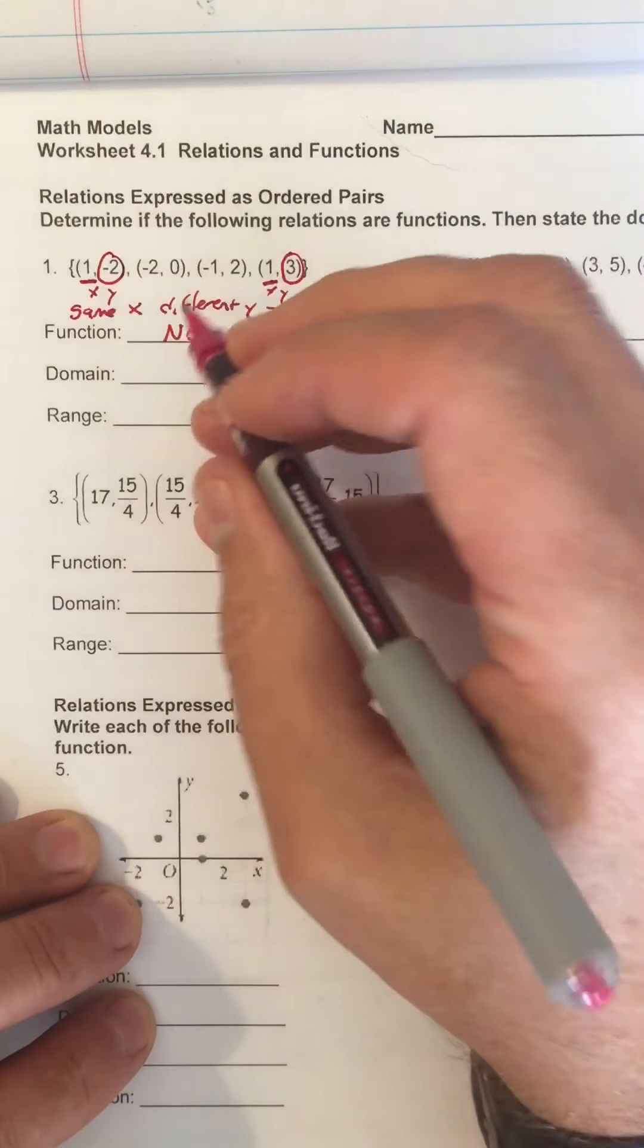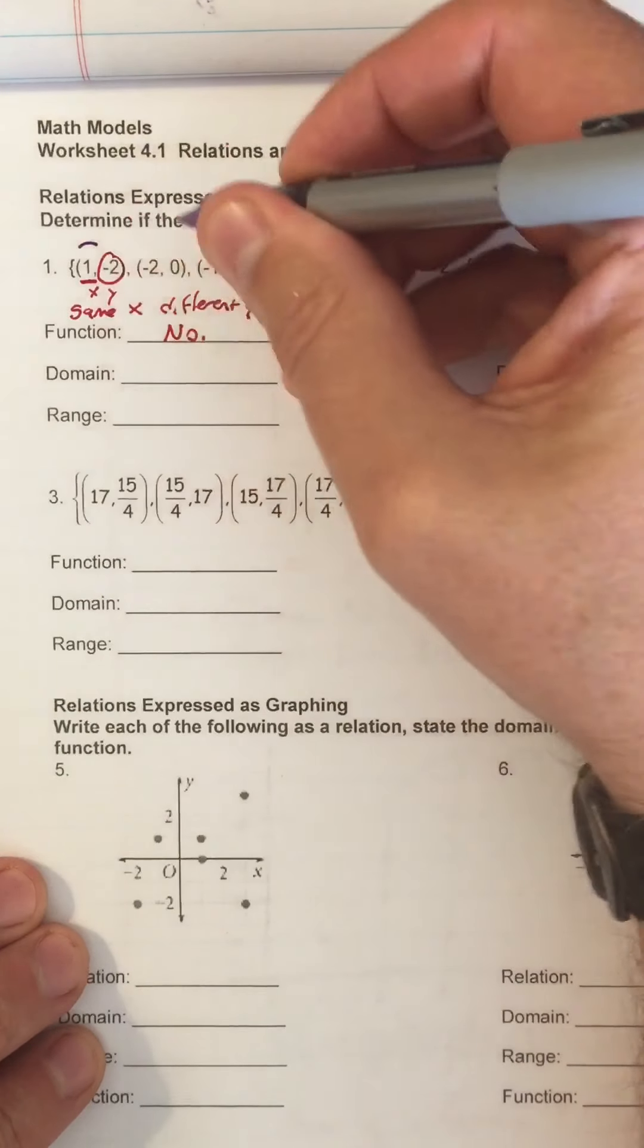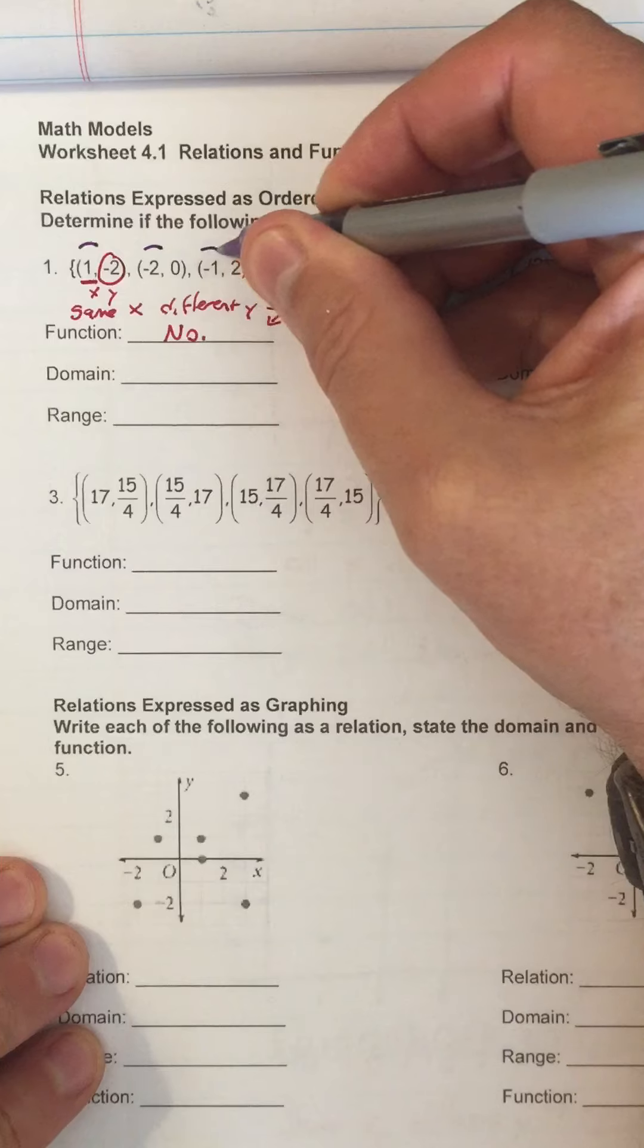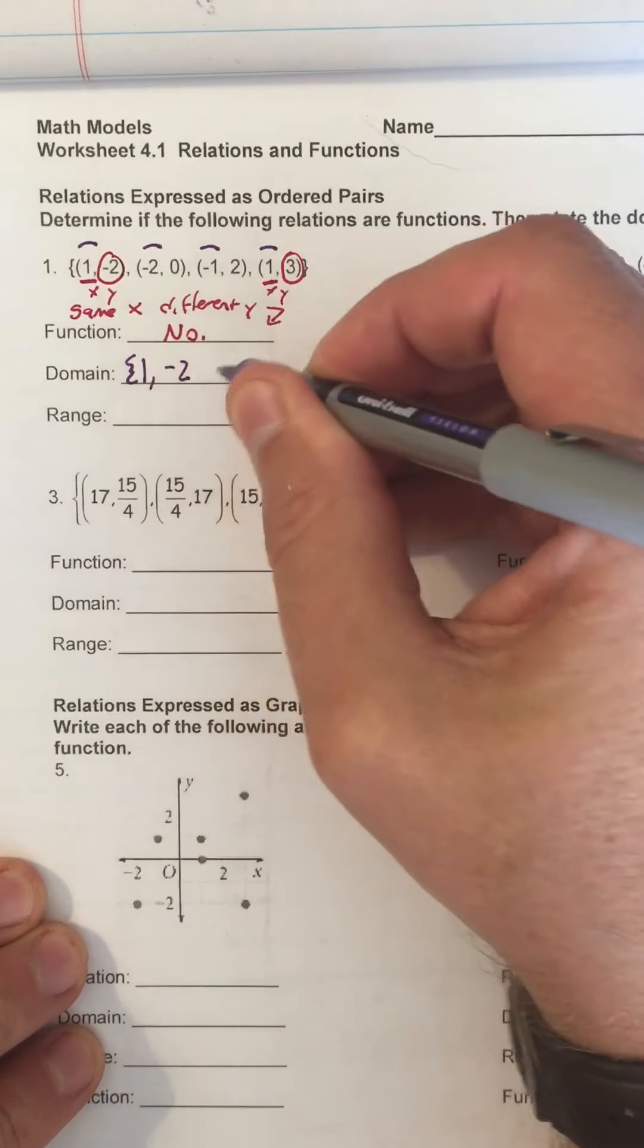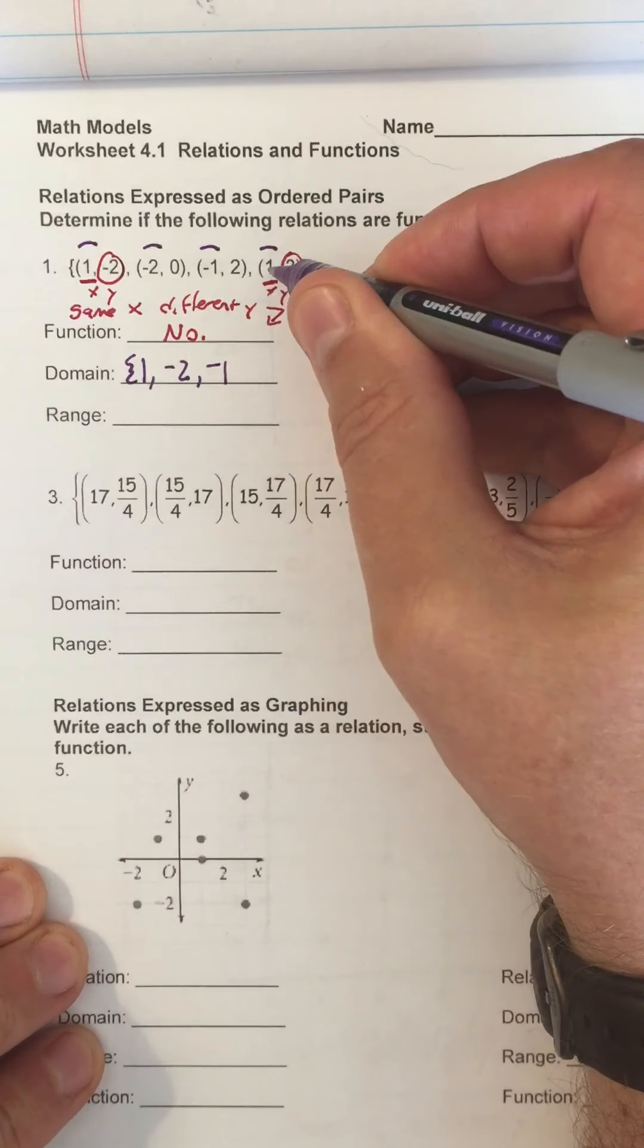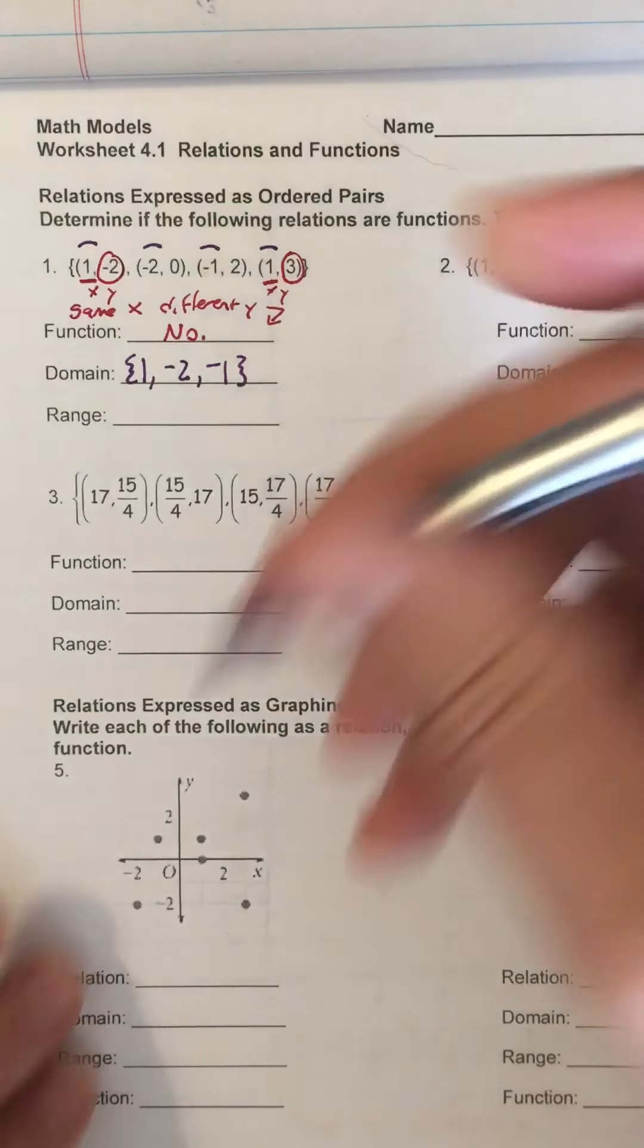Alright, what is the domain? The domain is all the x numbers. 1, negative 2, negative 1, and 1. So 1, negative 2, negative 1. And since we already have one, we don't have to put it again, so we're just going to close our brackets.